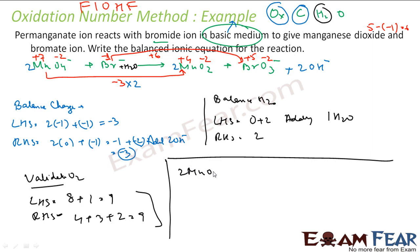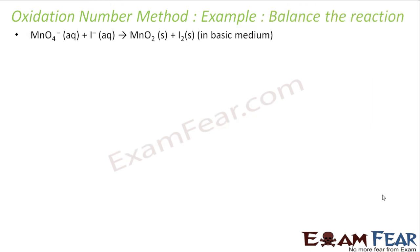The final balanced reaction is: 2 MnO₄⁻ plus 2 Br⁻ plus H₂O gives 2 MnO₂ plus BrO₃⁻ plus 2 OH⁻. Let's take another example — we have to balance a reaction also in basic medium. Our step is: oxidation, consume water — that is the memory tip.